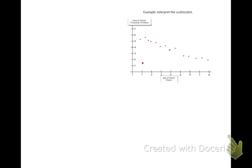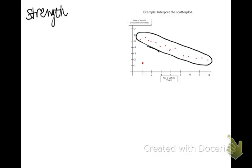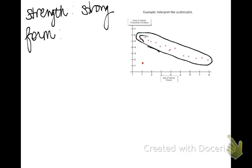Let's practice interpreting a scatter plot. There are five things to look for, and the first is strength. To decide strength, form a band around the points and decide whether the band is fairly narrow or wide. Here, the oval seems to be pretty narrow, which means the relationship is strong. The next thing is form — in this case, the points seem to fall along a line, so the form would be linear. However, there is one value that's not following the overall trend, and we'll get to that later.